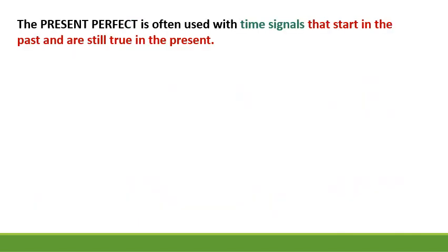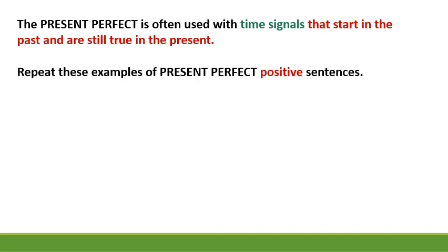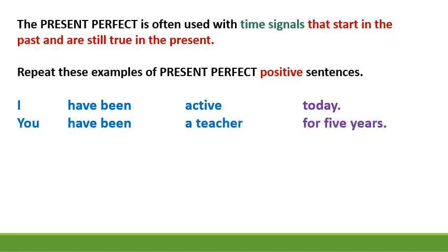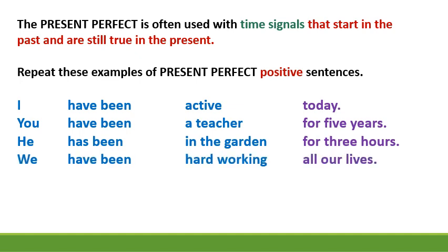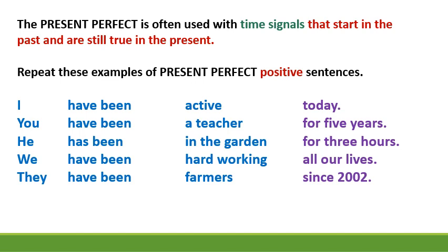The present perfect is often used with time signals that start in the past and are still true in the present. Repeat these examples of present perfect positive sentences: I have been active today. You have been a teacher for five years. He has been in the garden for three hours. We have been hardworking all our lives. They have been farmers since 2002. She has been at home since Tuesday.